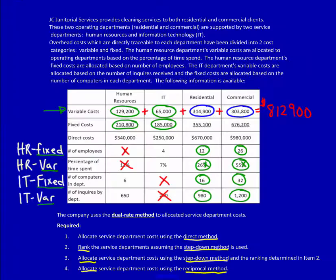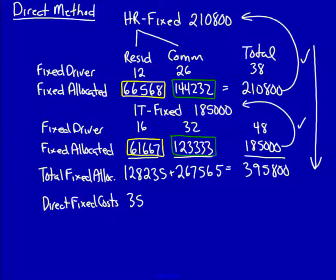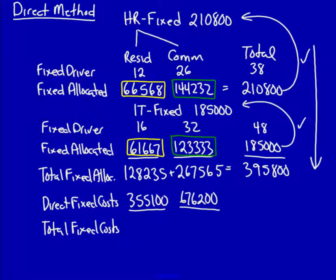355,100 and 676,200 — add those into the total fixed allocated and we're going to get the total fixed costs: 483,335 and 943,765. Adding those two together we get one million four hundred and twenty-seven thousand one hundred.